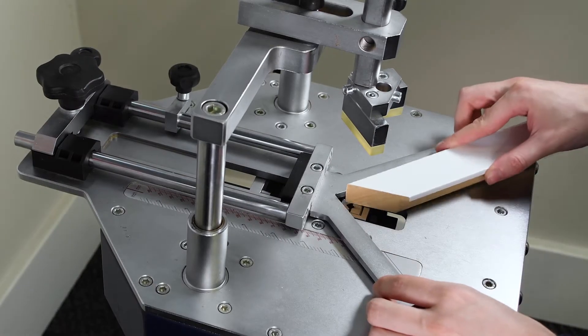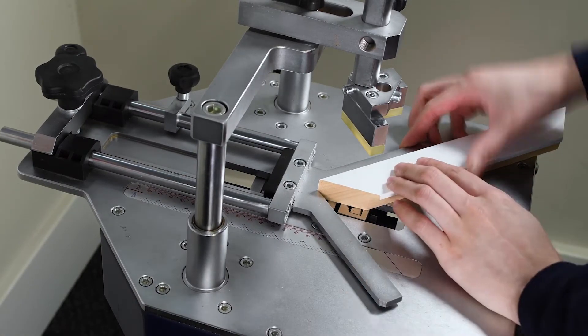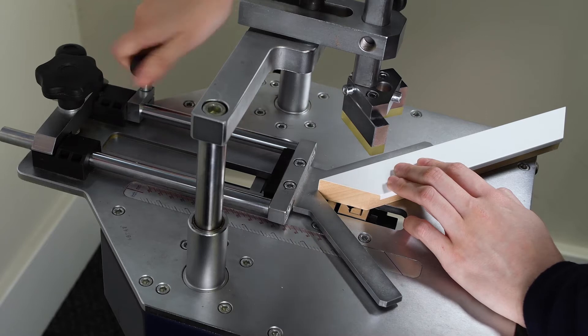Now bring your moulding up to the back fence and measure where you want to insert your V nails. Tighten the knobs to lock the fence in place.